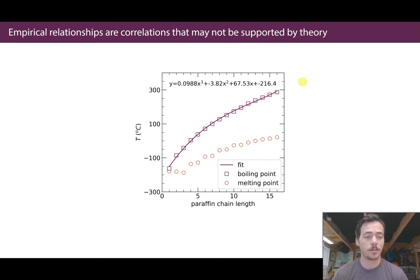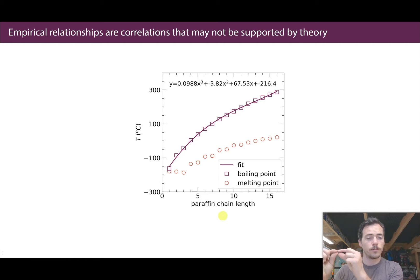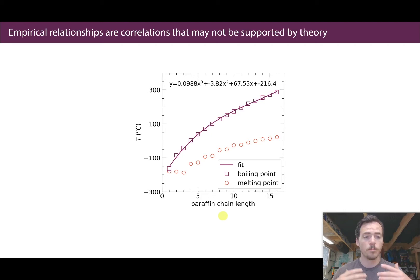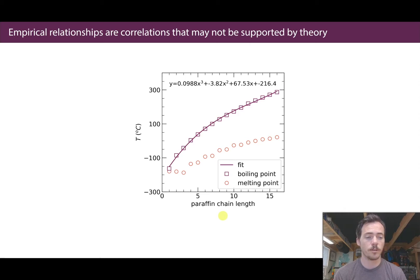What's different about machine learning is the complexity of the patterns we can capture. That paraffin example is a very simple one — one target variable as a function of one other variable. But what if you start changing the atoms, or use branched polymers instead of straight ones? Add more variables or multiple targets and our human mind doesn't do a great job of capturing patterns in high-dimensional space. But we can train algorithms to capture those trends with ease.